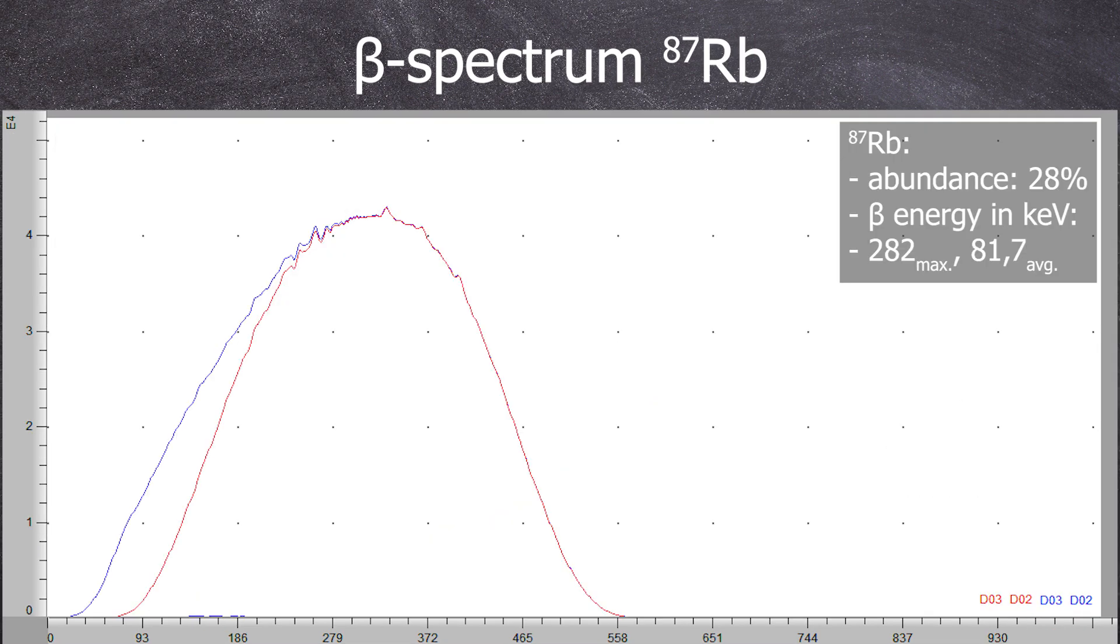Next is rubidium-87, which accounts for 28% of all naturally occurring rubidium atoms and decays 100% into strontium-87, with a half-life of 4.8 times 10 to the power of 10 years. It has a maximum beta energy of 282 keV and an average beta energy of 81.7 keV.